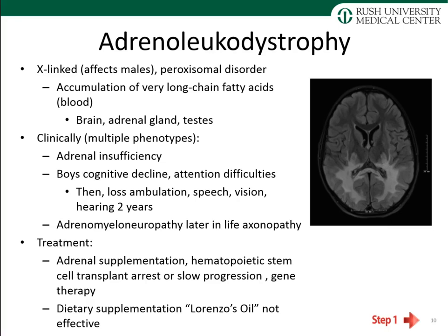Adrenoleukodystrophy is an X-linked disorder — meaning it affects males only — of the peroxisome. Because of this genetic mutation, patients accumulate very long-chain fatty acids in the blood, brain, adrenal gland, and testes. There are multiple phenotypes: adrenal insufficiency, cognitive decline, and attention difficulties in boys, who then develop loss of ambulation, speech, vision, and hearing within two years of symptom onset. A later-in-life axonopathy in adults is termed adrenomyeloneuropathy. Treatment focuses on adrenal supplementation and hematopoietic stem cell transplant, which can arrest or slow progression.